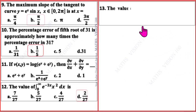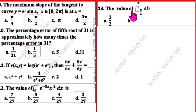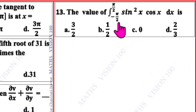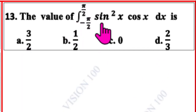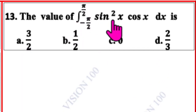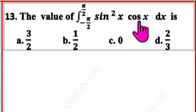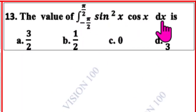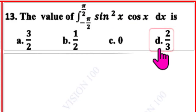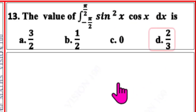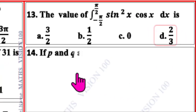Question number 13. The value of integral from −π/2 to π/2 of sin²x cos x dx is — the correct option is D: 2/3.